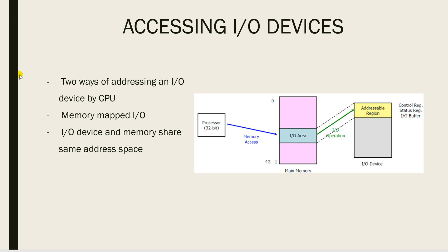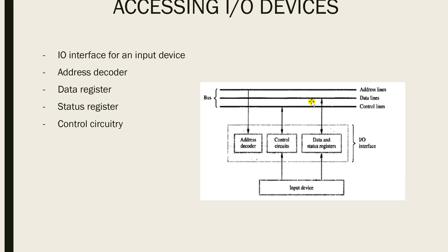There are two ways in which an I/O device is addressed by the CPU. The CPU places the address of the I/O device it needs to communicate with onto the address line. This mode of addressing can be one of two kinds: memory-mapped I/O or I/O-mapped I/O.